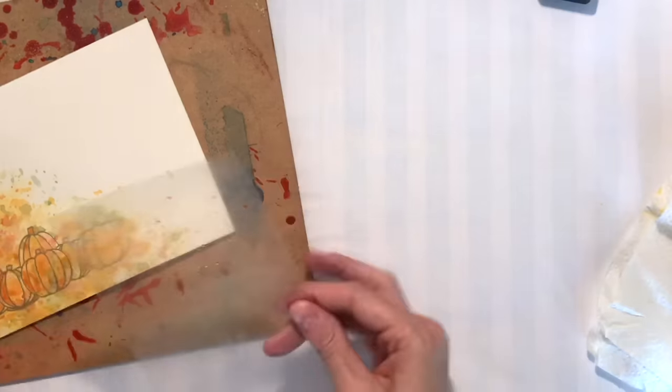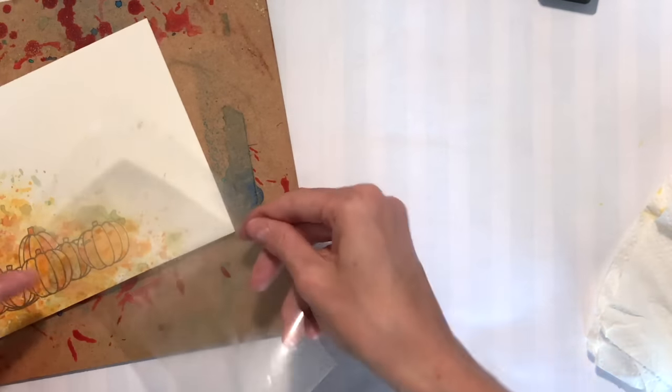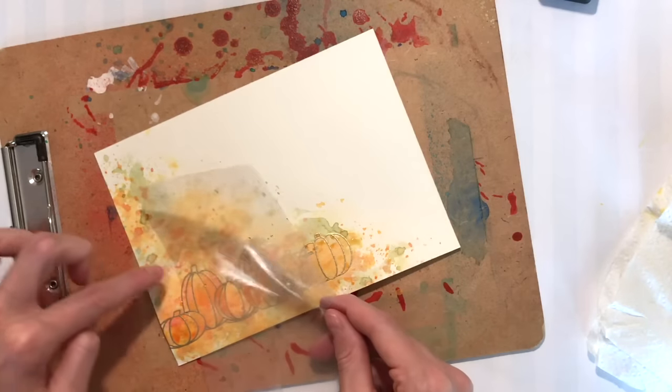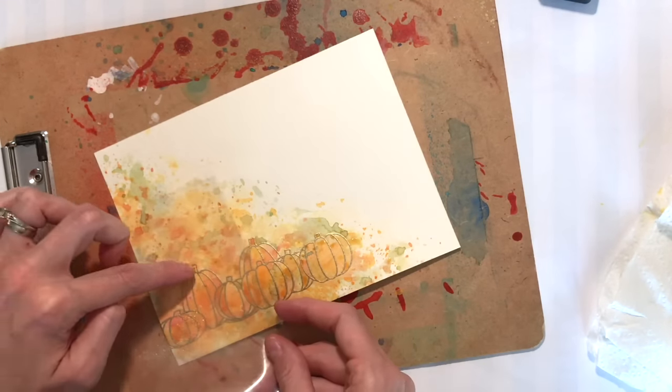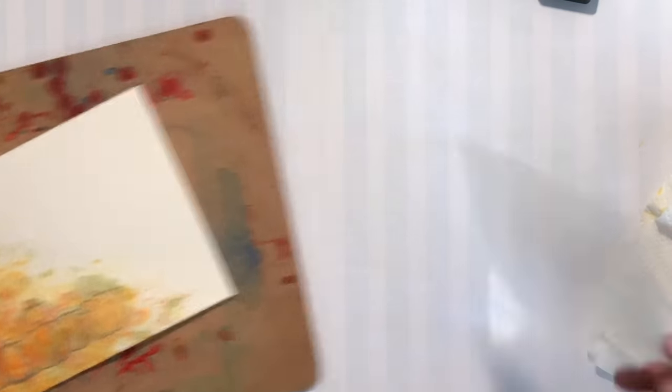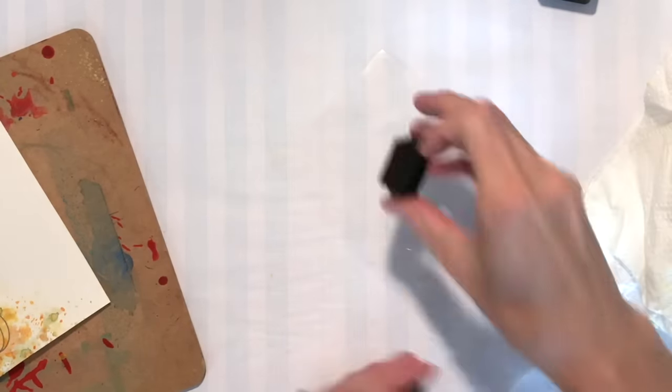And again, I'm moving the acetate around and using that corner of the acetate to kind of just move that ink where I want it to go. So I have a little bit more control. Even though this is kind of a loosey-goosey kind of technique, you can have a fair amount of control using that corner of the acetate.